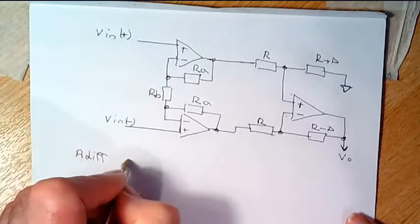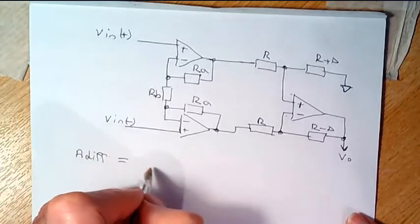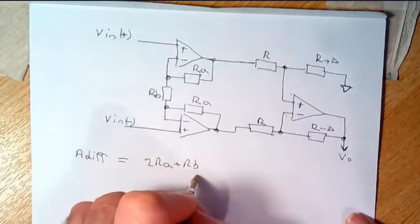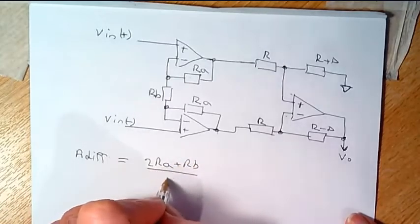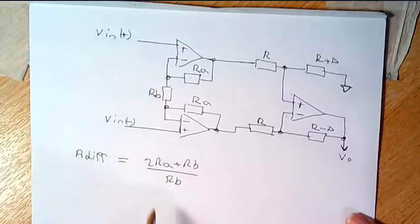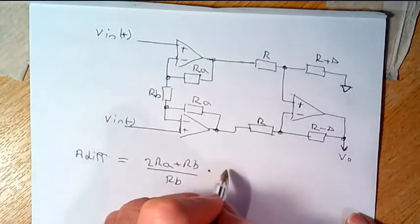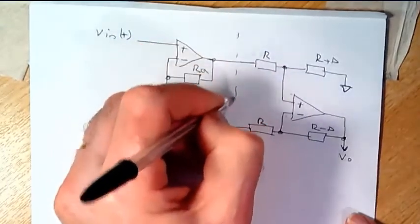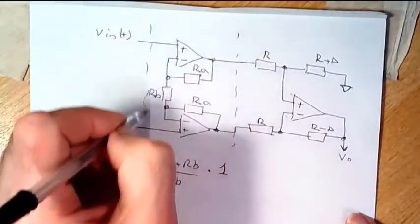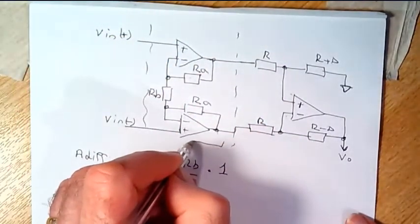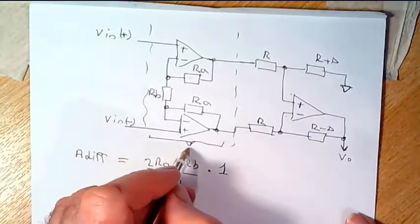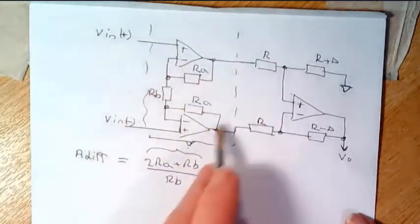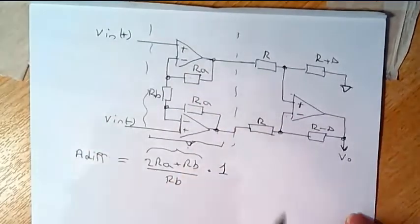equals 2RA plus RB over RB times 1, because we have this part of the gain defines the gain of the input stage,